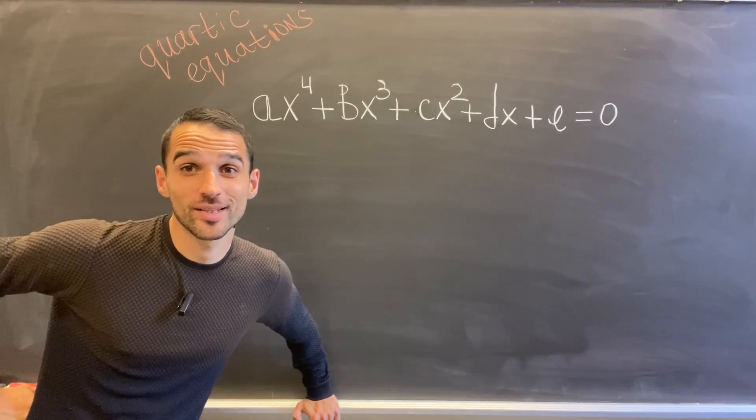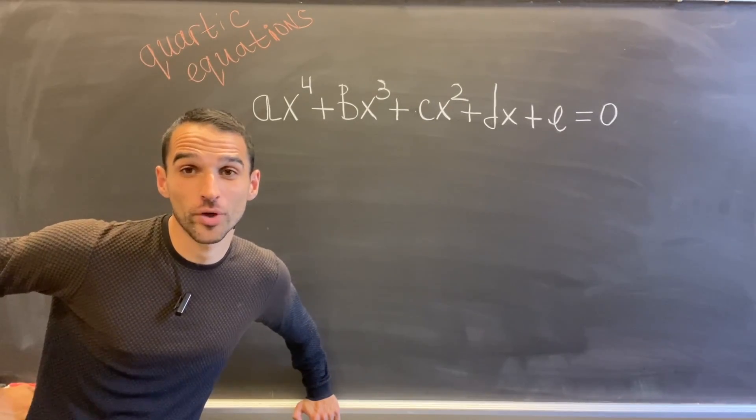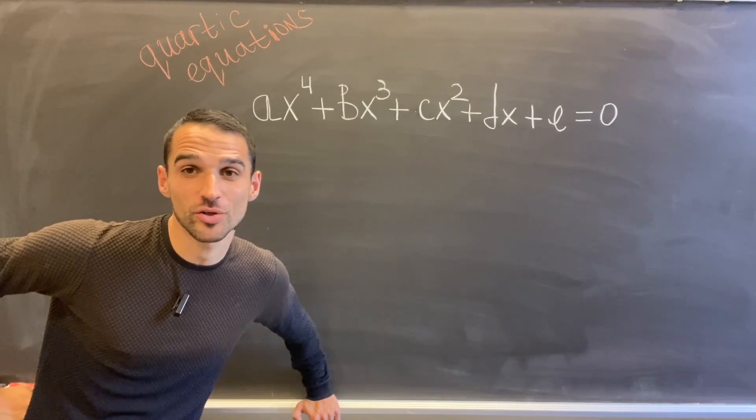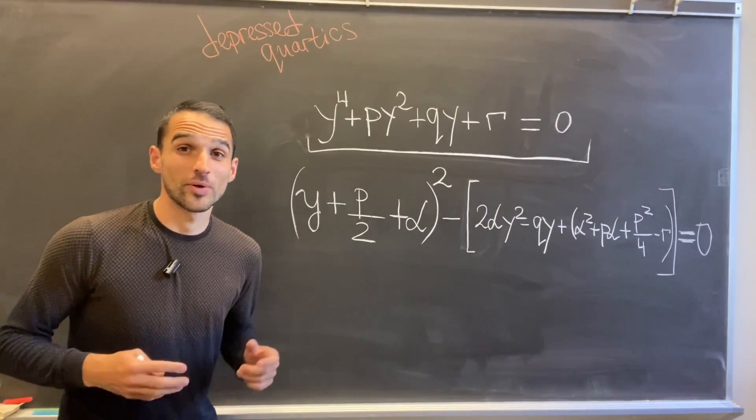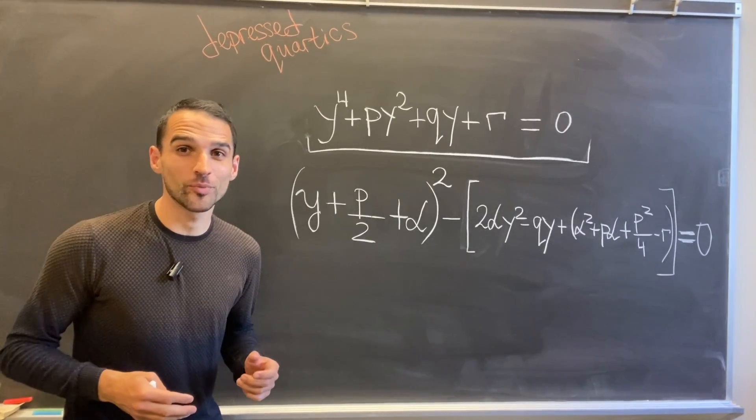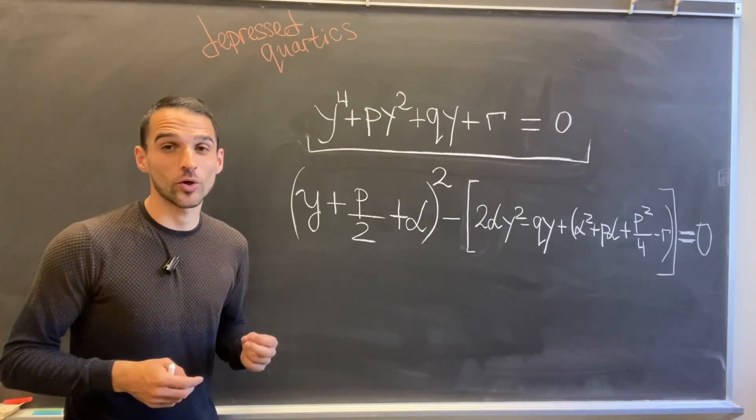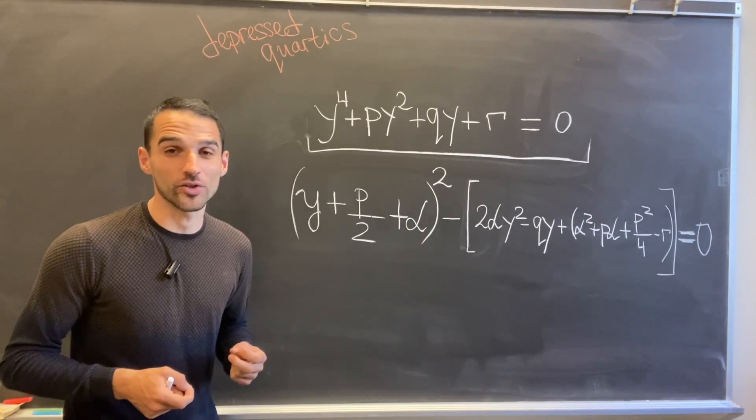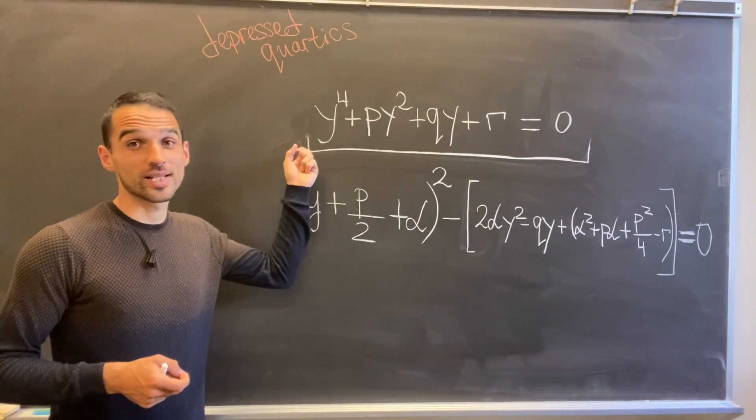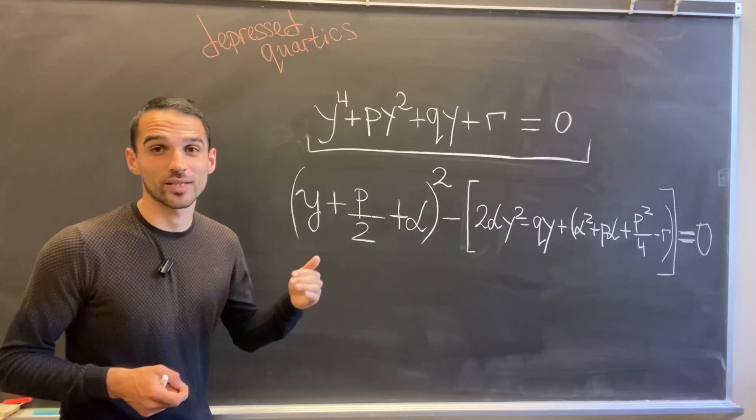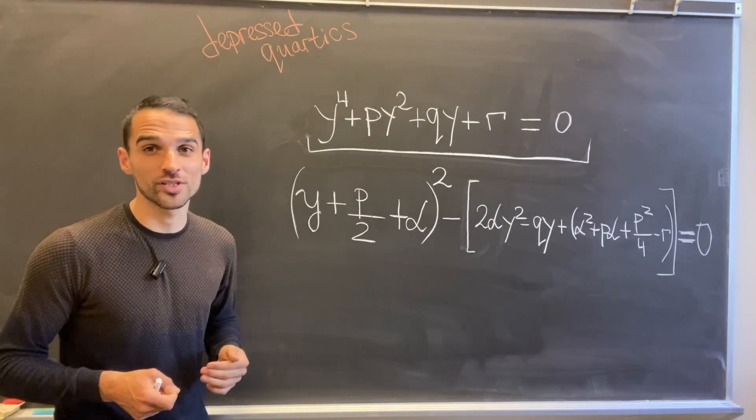We are not going to stop here—we can even solve degree four equations called quartic equations using the same initial idea. Let's see how. As before, we can remove one term—in our case the cubic term—and we get the so-called depressed quartic equation. Also notice that we can always assume that the leading coefficient is one because we can divide by it all other coefficients.